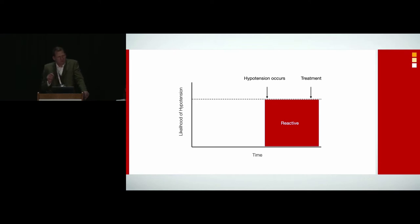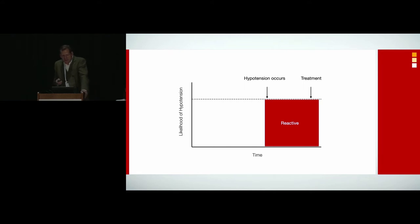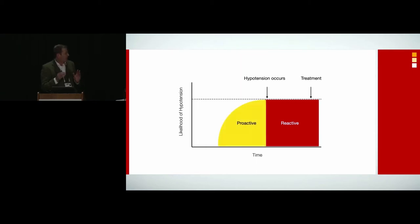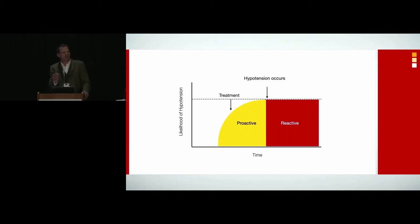Hypotension doesn't just occur suddenly — with the exception of a surgical clamp coming off. There is a state of biological instability that precedes it and leads to hypotension. If we could detect this — and we can't with our current monitors — we can move to the state of proactive medicine, treating the event before it actually happens, or treating the physiology that leads to the event.